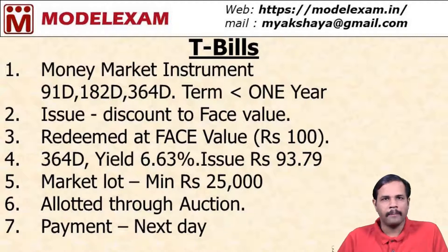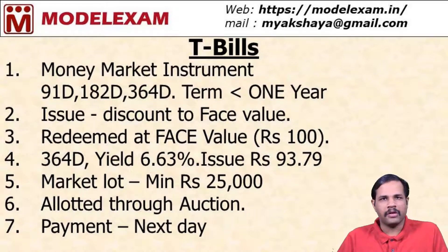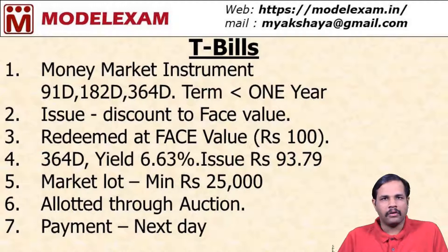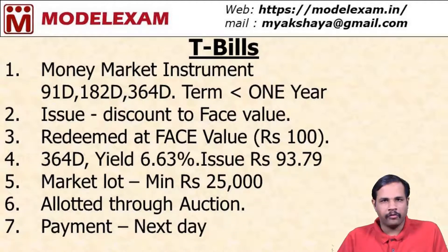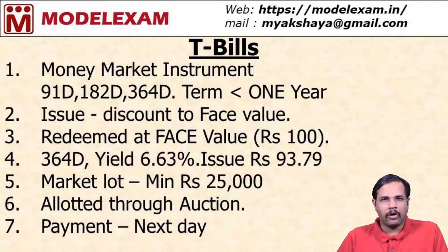Normally the face value is rupees 100 and these treasury bills will be issued at a discount and redeemed at face value — that is, the redemption price shall be 100. For instance, consider the 364-day treasury bill: if the yield is 6.63%, then the issue price would be close to 93.79. So they are issued less than face value and at maturity they will pay 100. The market lot of a treasury bill is rupees 25,000.